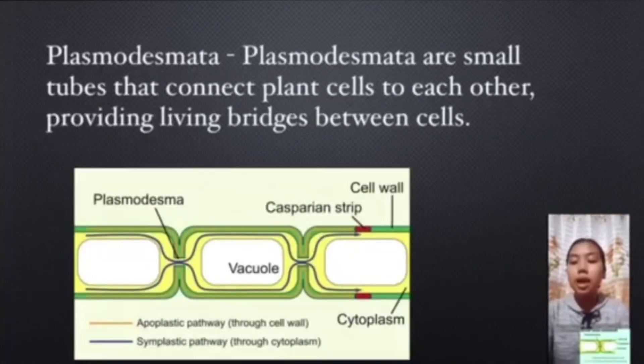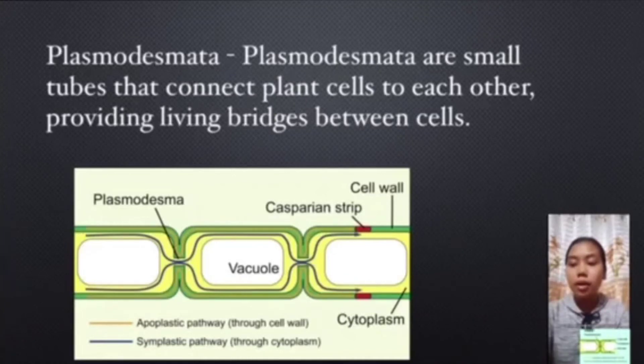Plasmodesmata. Plasmodesmata are small tubes that connect plant cells to each other, providing living bridges between cells.